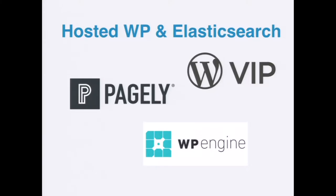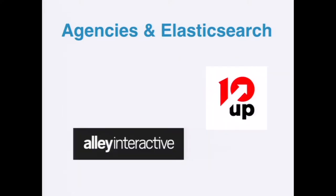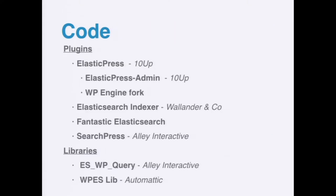A number of folks across WordPress have found Elasticsearch useful. There are a number doing hosted WordPress plus Elasticsearch, and this seems to be growing. Stuff I've worked on is WordPress.com VIP, where we've been doing this for over two years. Pagely and WP Engine are both working on this. There's also agencies: Alley Interactive and 10up have written and open sourced a lot of code for merging Elasticsearch and WordPress, and there are several plugins and libraries out there exploring how to do this integration.